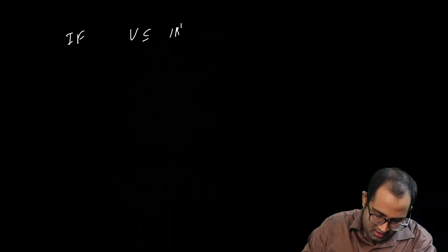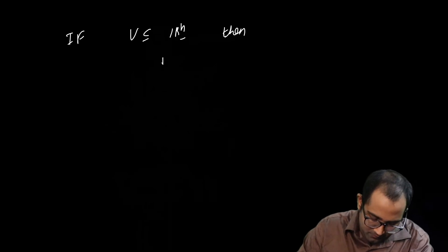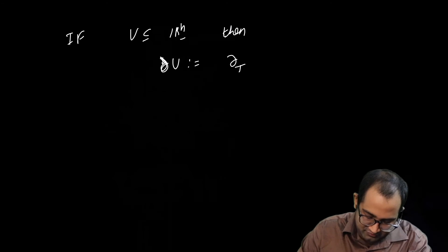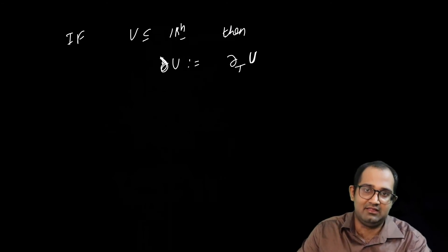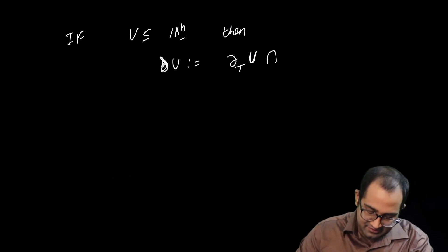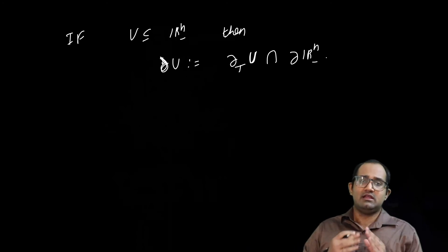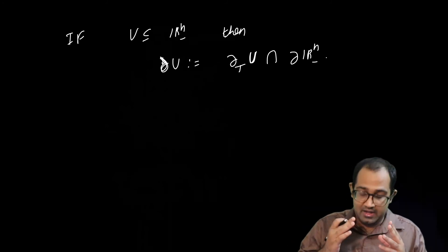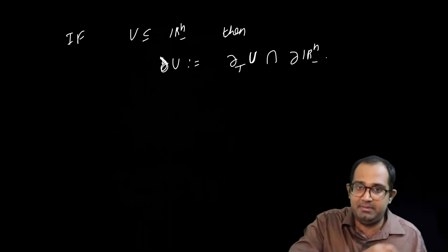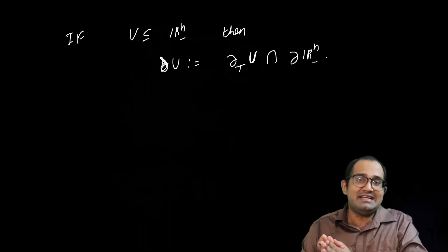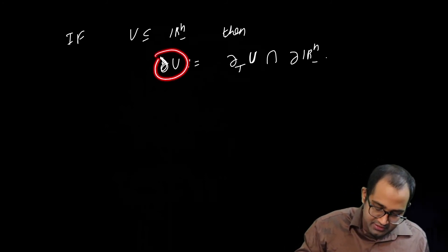If U is a subset of Rn minus, then the boundary of U is by definition the topological boundary intersected with the boundary of Rn minus. The topological boundary and the boundary of Rn minus are obviously the same — that is just the x1 equals 0 plane. You look at those points in the topological boundary of U which intersect this plane, and that is called the boundary of U.